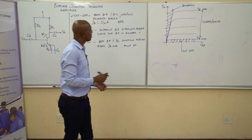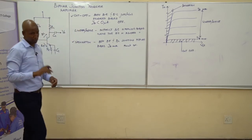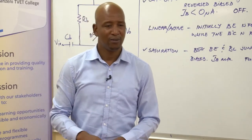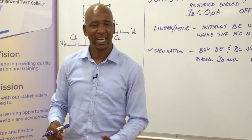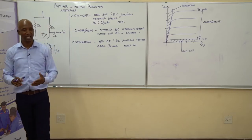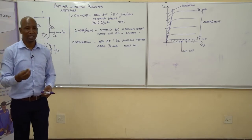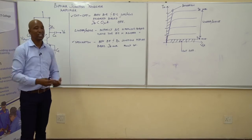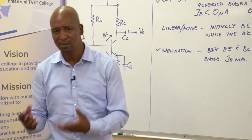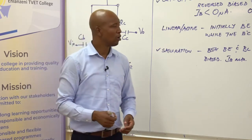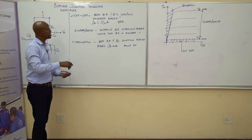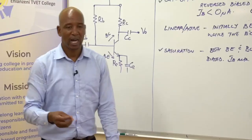That leads us to what we call biasing the transistor. What do we mean by biasing the transistor? It is simply a method of establishing predetermined values of voltages and currents at various points of a circuit so that we can set an appropriate operating point for the transistor. Transistors need to operate at a certain point — they have a specification written on them telling you how the transistor should be operated, its maximum and minimum values.